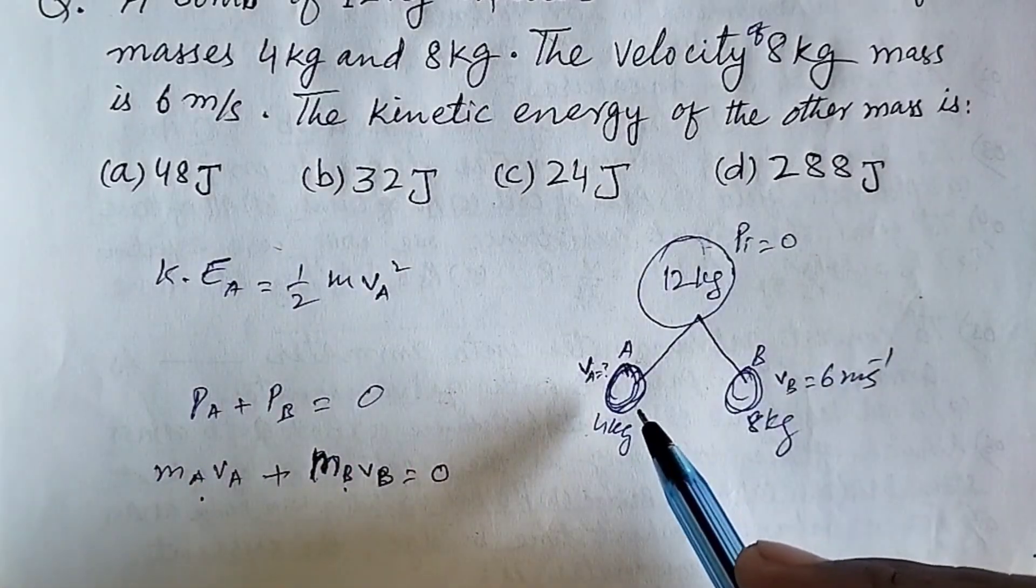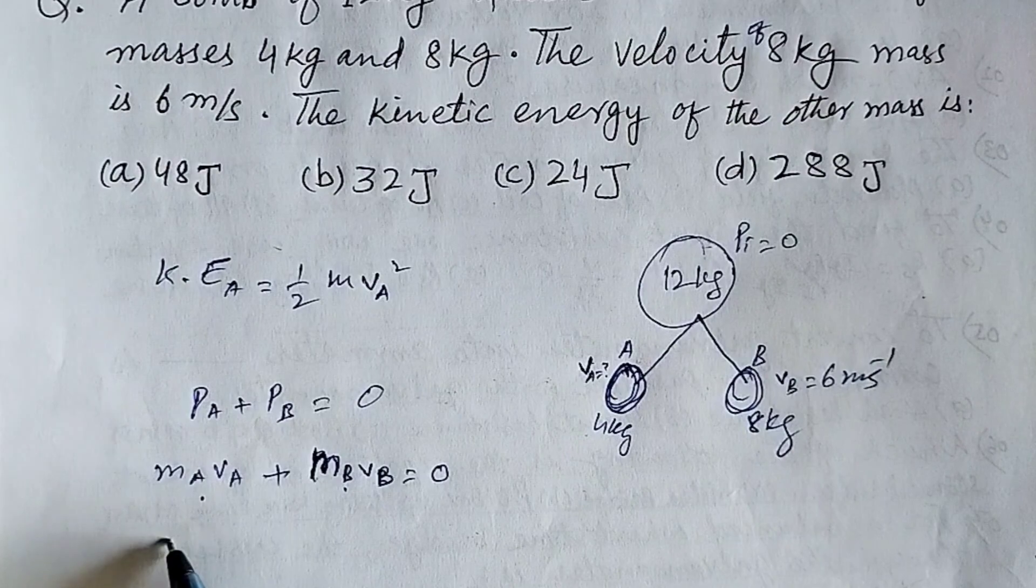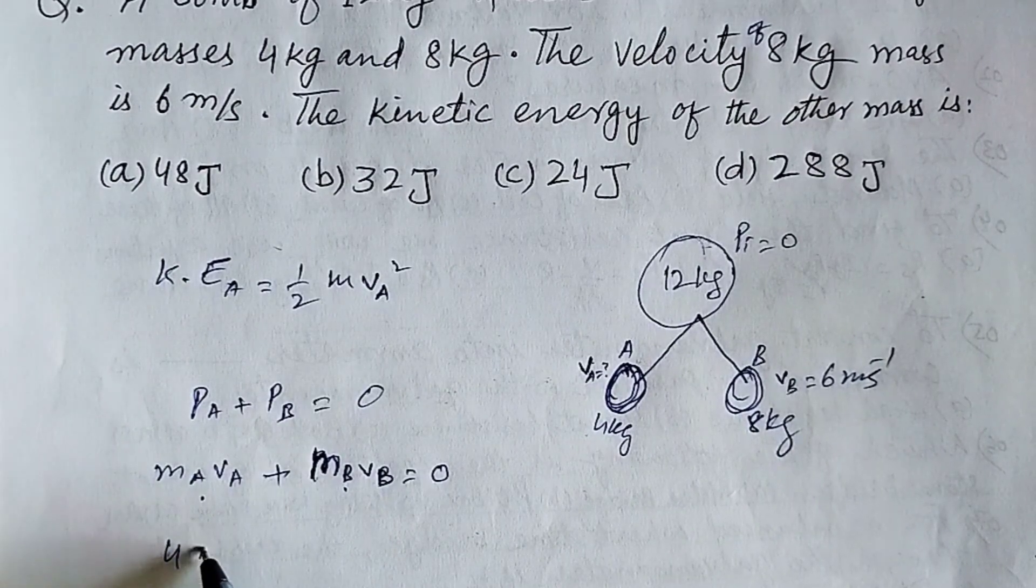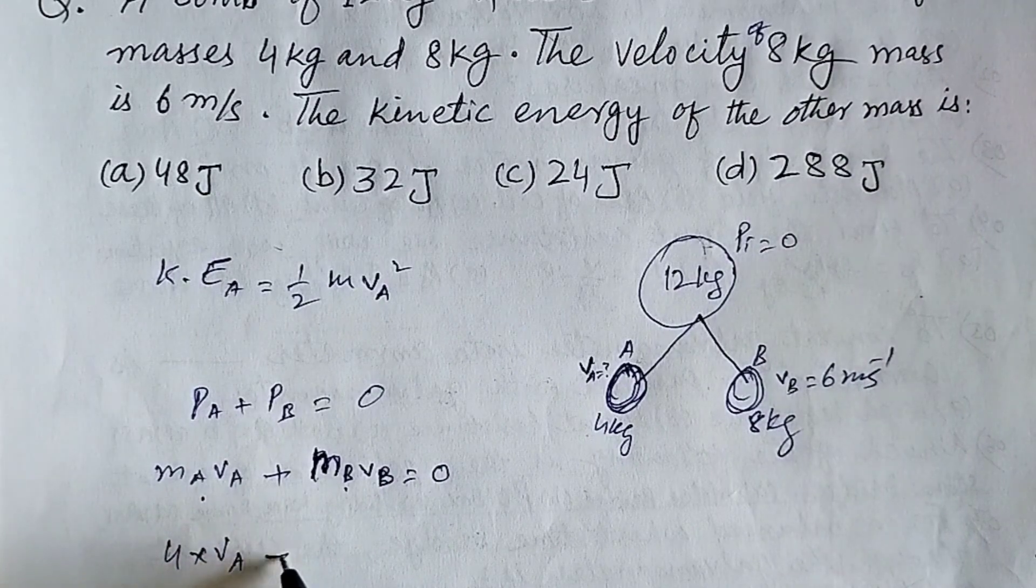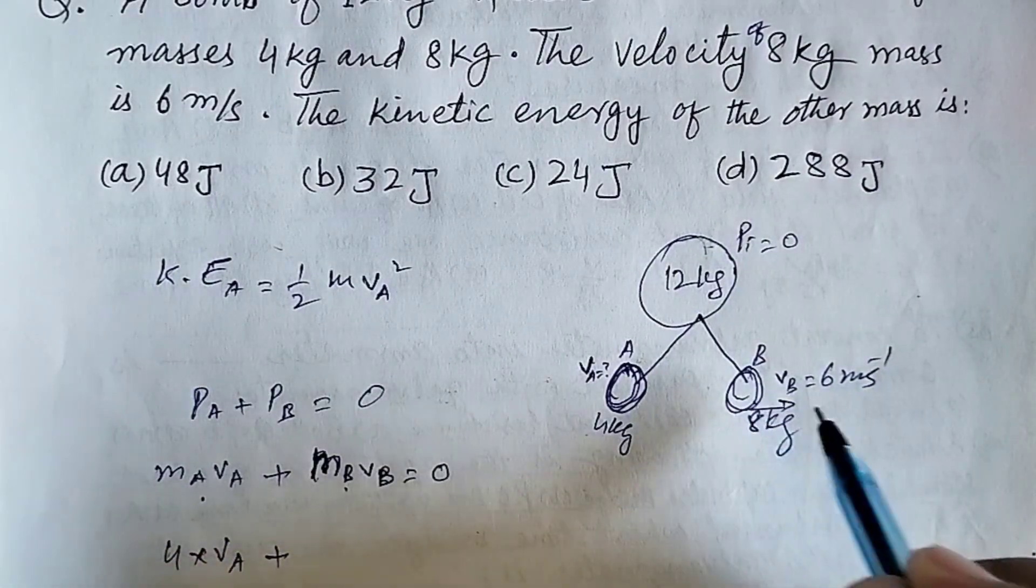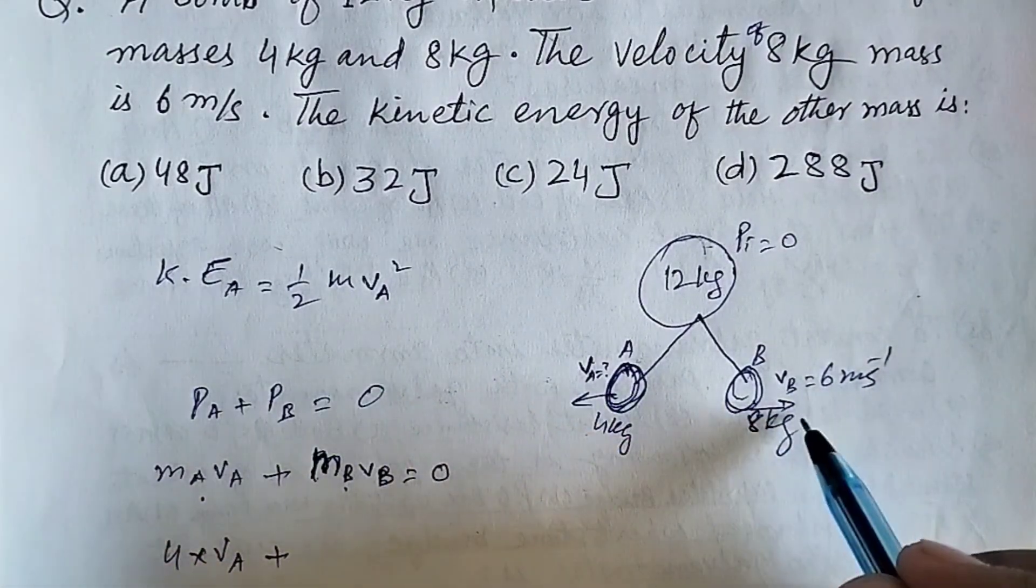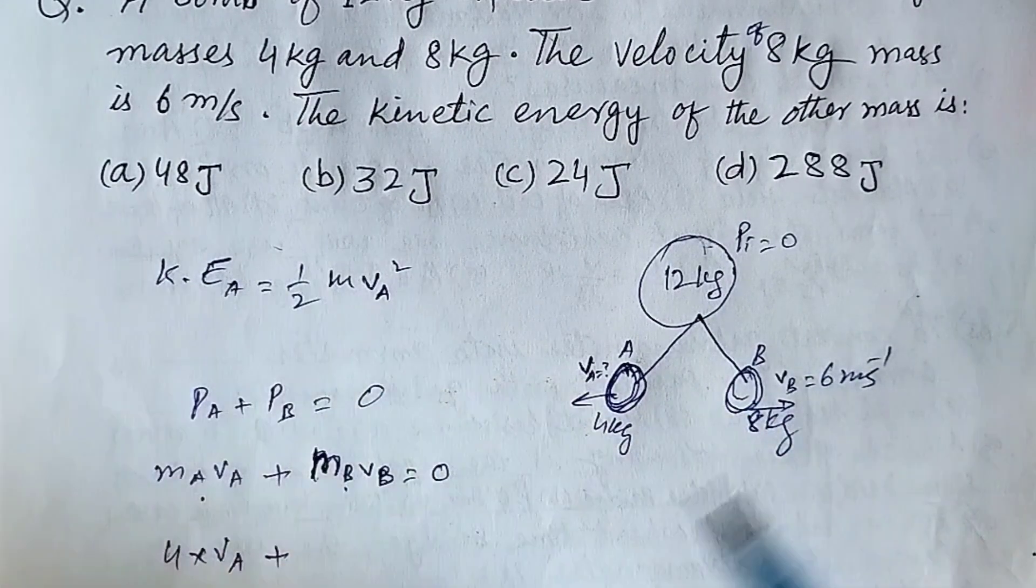So mass of A, 4 kg into velocity of A, plus the parts are moving in opposite direction, so this will be negative.